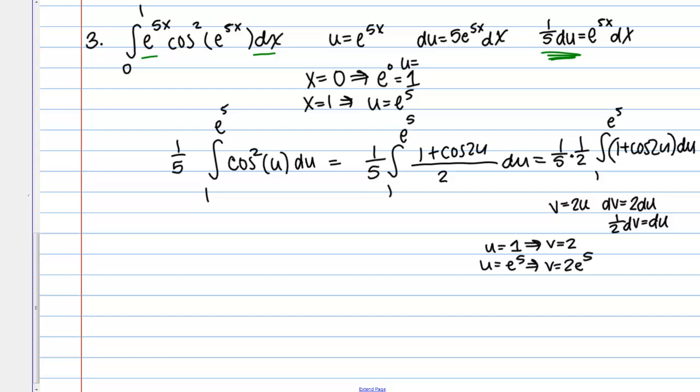So then my new integral is 1 over 10 integral from 2 to 2e to the 5. Let's see, I have 1 plus cosine of v times du, which is 1 half dv. So I get an additional factor of 1 half out front, that makes that 1 over 20 integral from 2 to 2e to the 5, 1 plus cosine v dv.